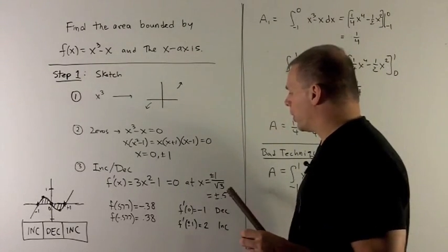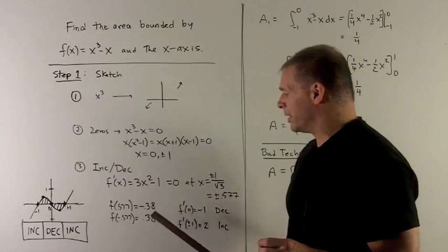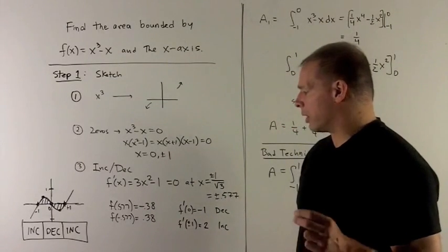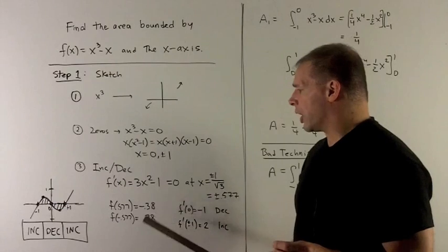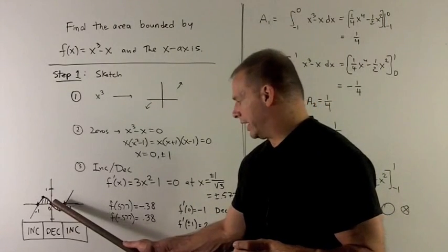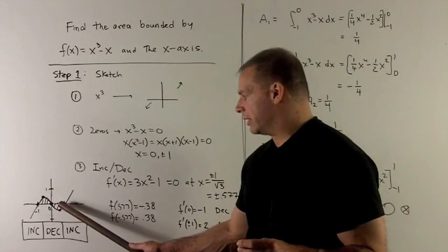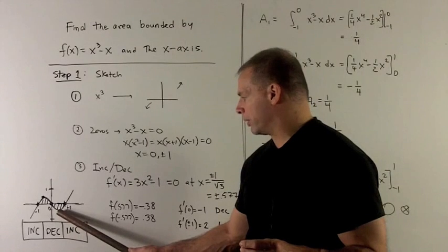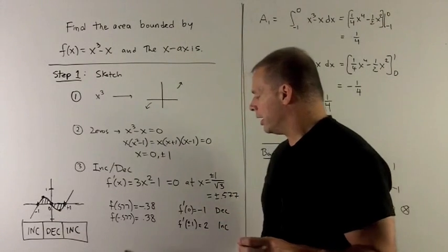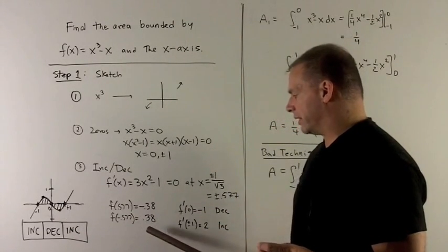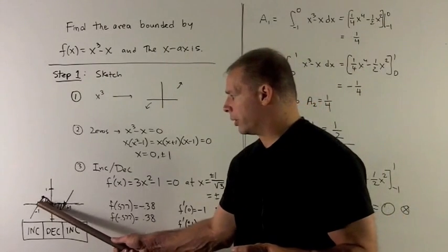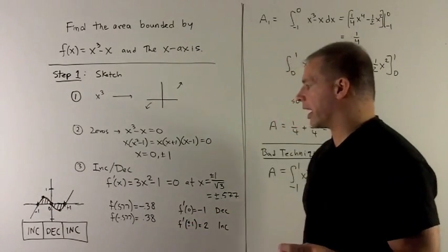I plug those points into the original function, so that way I can put points on the graph. We're going to have the point roughly 0.577, -0.38, which is right there, and then -0.577 goes to 0.38, that point right there.